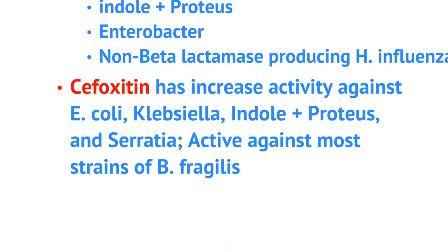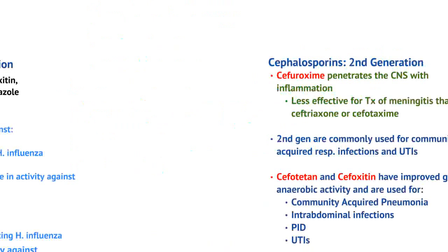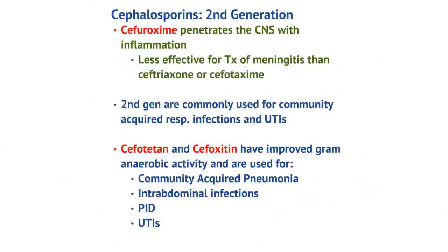In terms of specifics, second gen drugs such as cefuroxime do penetrate the CNS with the presence of inflammation, as in active meningitis. However, second generation cephalosporins are inferior to third generation agents such as ceftriaxone or cefotaxime in the treatment of meningitis. Second gens are commonly used for community-acquired respiratory infections and urinary tract infections.